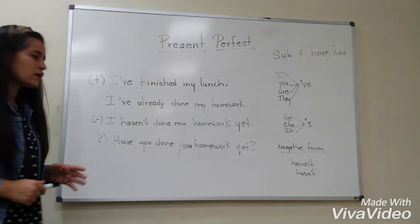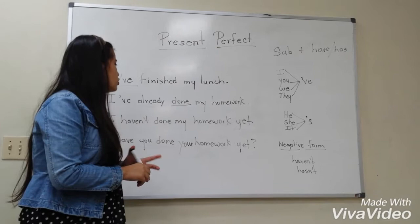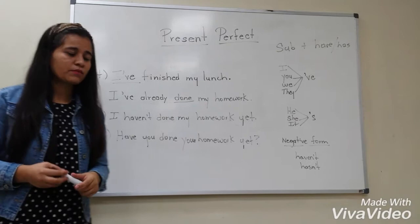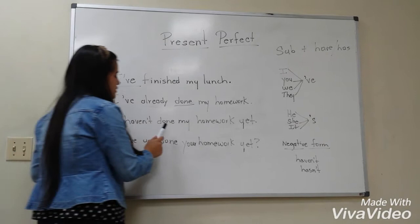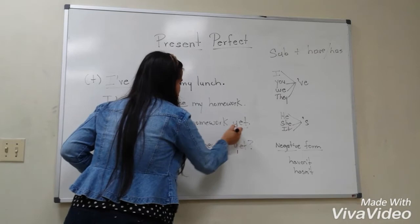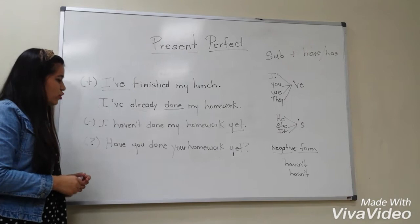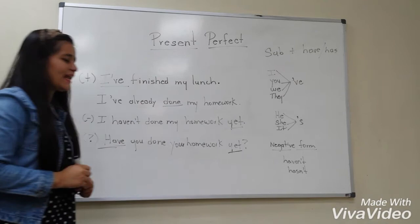Already usually goes after the verb have and before the main verb. You need to be careful because you only use the past participle of the verb in the present perfect. And when do we use yet? We only use yet in negative sentences and questions. For example: I haven't done my homework yet. We usually put yet at the end of a sentence. For a question: have you done your homework yet? Yet usually goes at the end of the sentence.